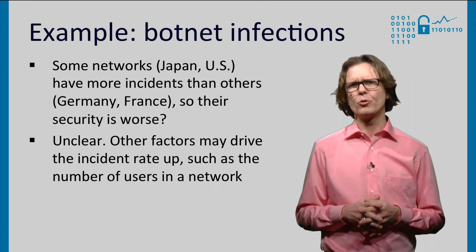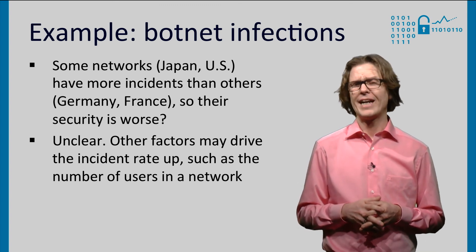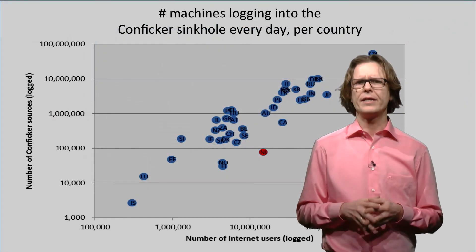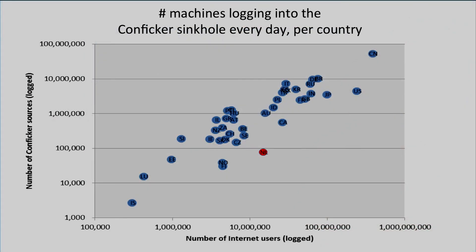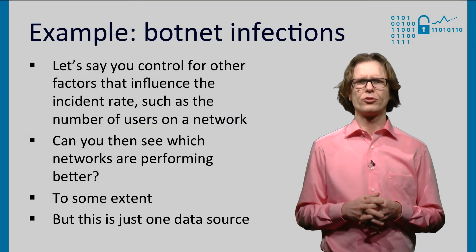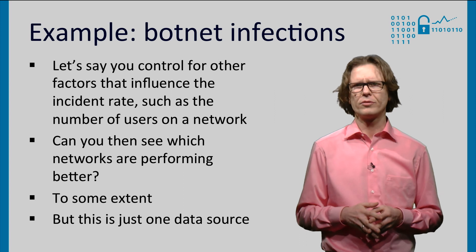So the rank metric would tell you that some countries have more infections than others. Does that mean their security is worse? Not really. There are many other factors that might drive up their incident rates — factors that have nothing to do with security. An obvious one is the number of users in the network. Indeed, if we plot the number of infected machines in each country against the number of users in that country, you see a clear linear relationship. In other words, the more internet users in the country, the more infections. That doesn't mean its security policies are worse. If you know that a certain factor drives the incident rate, you could, for example, divide the number of infections by the number of users.